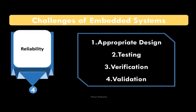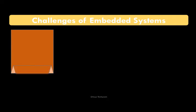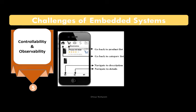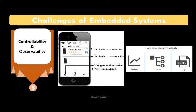The fifth important challenge is controllability and observability. We should have control over the device — for example, mobile phones have options like closing apps, shutting down, and restarting. If there is a TV, we have a remote to operate it from elsewhere in the room. Observability means letting the user observe device parameters such as metrics, tracers, and logs, allowing the user to analyze these observability parameters.